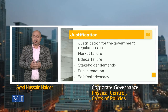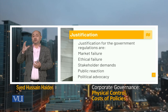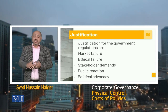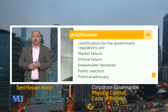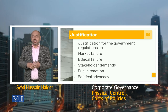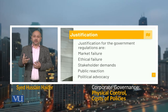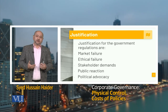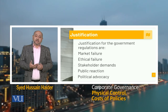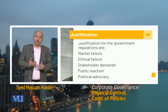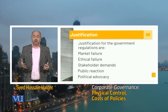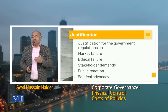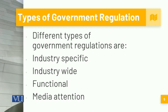There could be public reaction towards something, as seen in the automobile industry when the cost of automobiles became so high that the government intervened through different mechanisms. Or there could be political advocacy, and through parliament, different changes could be brought in for the betterment of the economy. These are the different justifications whereby the government tends to intervene directly or indirectly to improve the state of the economy.